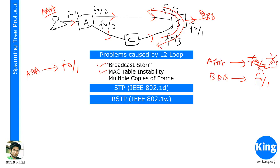The third problem is multiple copies of the same frame reaching a user. When the original user sent a frame, switch A forwarded it out on both interfaces. Switch B correctly forwarded it to the destination user BBB. But because switch A also sent that same frame to switch C, switch C forwarded it to switch B again, and switch B delivered it to BBB a second time. So the user receives duplicate frames, which causes application-level errors.